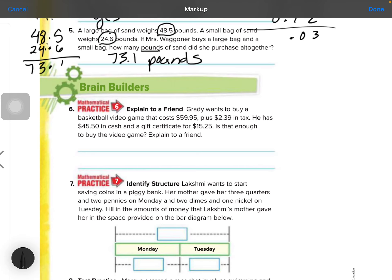Number 6, Grady wants to buy a basketball video that costs $59.95 plus $2.39 in tax. He has $45.50 in cash and a gift card for $15.25. Is that enough to buy? So first, what we need to do is we need to add those two numbers together to find out the total cost. Then we add these two numbers together to find out how much money he has. So two different addition problems. We have to line up the decimals.